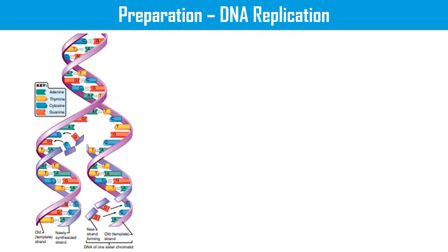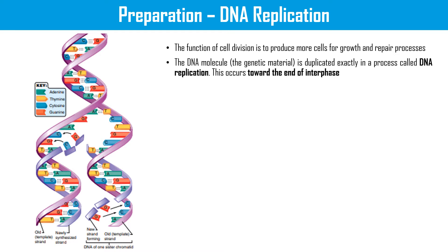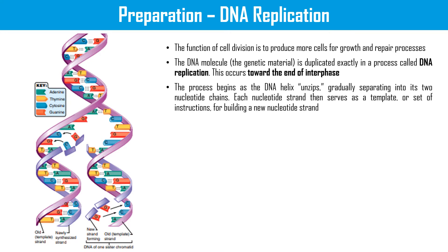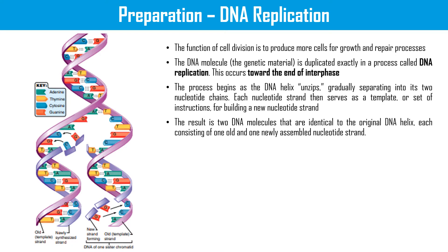In preparation for DNA replication, the function of cell division is to produce more cells for growth and repair processes. The DNA molecule, the genetic material, is duplicated exactly in the process of DNA replication, which occurs towards the end of interphase. The process begins as the DNA helix unzips, gradually separating into its two nucleotide chains. Each nucleotide strand then serves as a template, or a set of instructions, for building a new nucleotide strand.